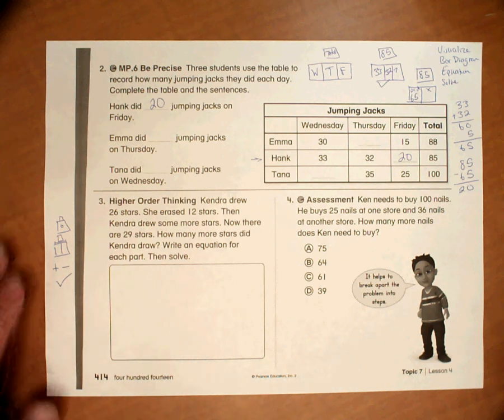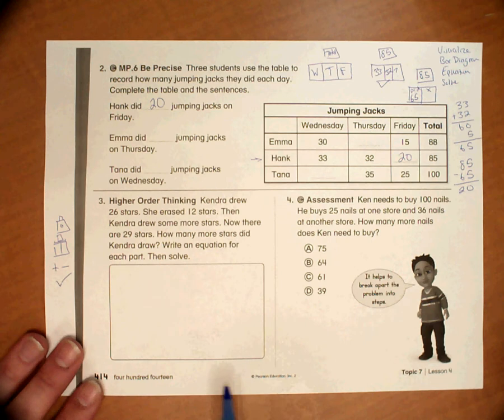This is problem number three on homework 7-4. It's a story problem that we're going to use the same steps that we've been using.